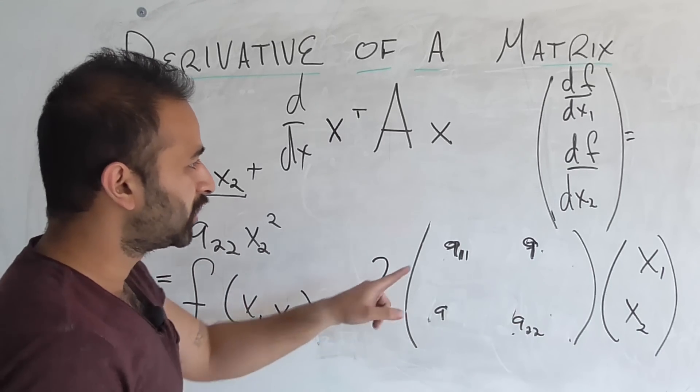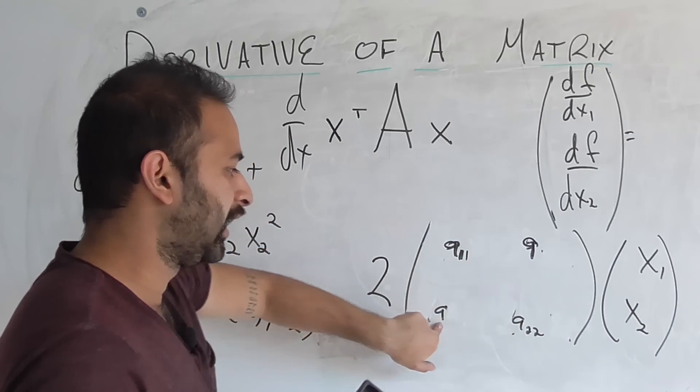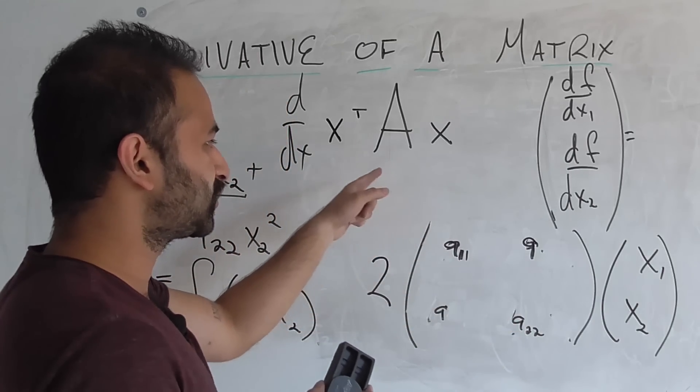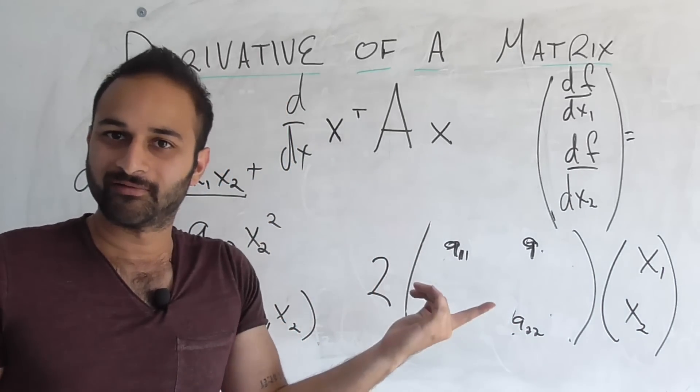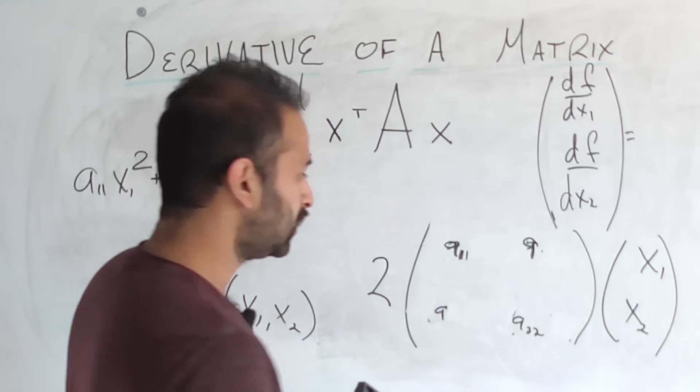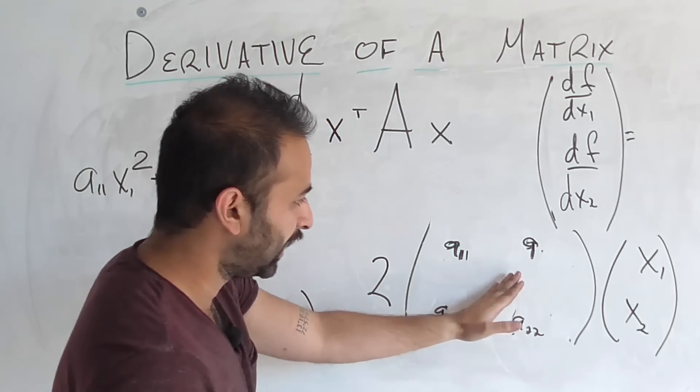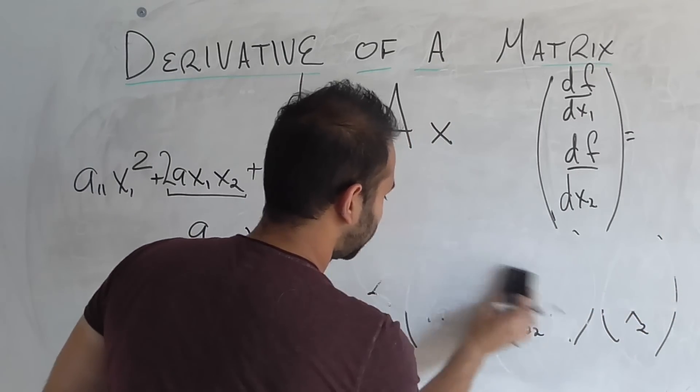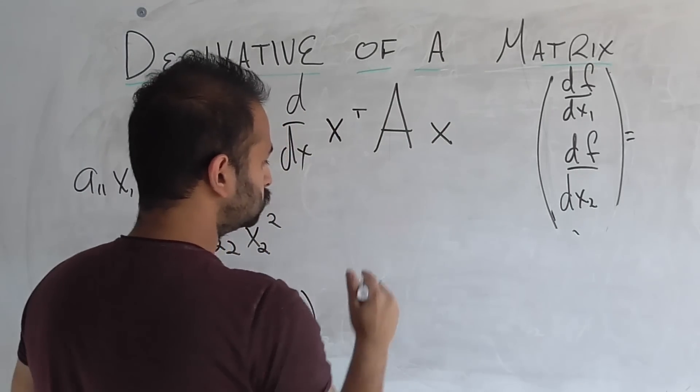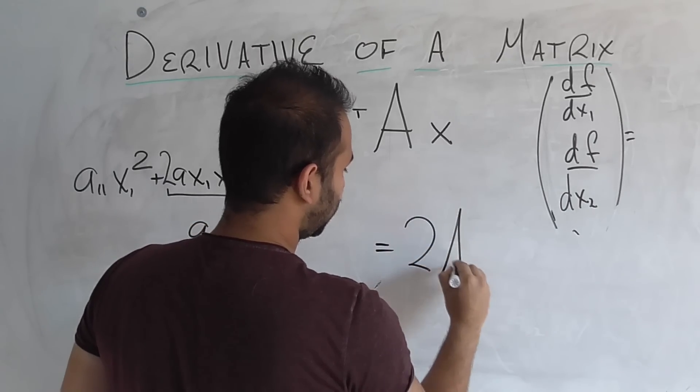But this is true here. And what is a11, a, a, a22? Well, that's just the original matrix A, right? I know we've erased it, but that's the original matrix A. So all in all, we have 2Ax. Is equal to 2Ax.